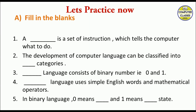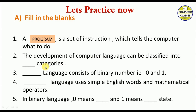The first fill-in-the-blank is: A dash is a set of instructions which tells the computer what to do — the answer is 'program.' The development of a computer language can be classified into dash categories — the answer is four categories. Dash language consists of binary numbers, that is zero and one — the answer is machine language.